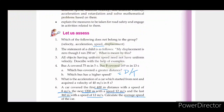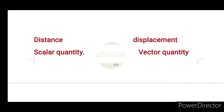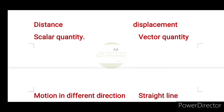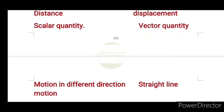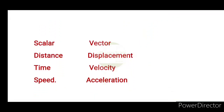What is the difference between distance and displacement? Distance is the scalar quantity. The distance is the path covered in different directions, while displacement is in a straight line. Scalar quantities include distance, time, and speed. Vector quantities include displacement, velocity, and acceleration.